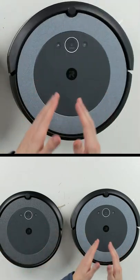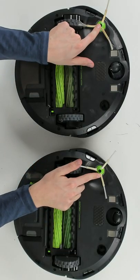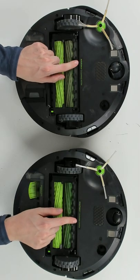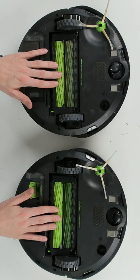To my left, we have the i3. To my right, we have the i4+. The only difference is the i4 is a rebadged version of the i3 just for Amazon to sell. So check it out. Same side brush, same AeroForce cleaning system. We have the same dual roller design.